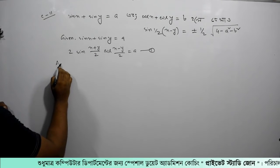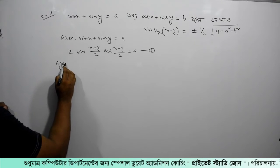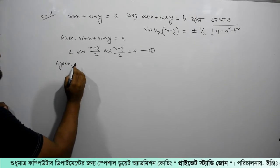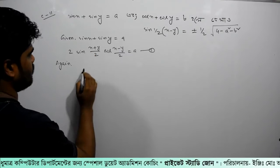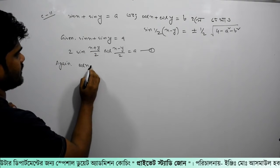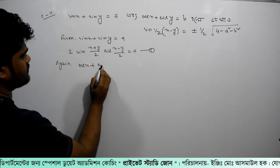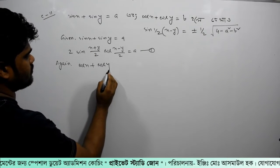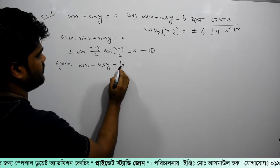Again, this is cos x plus cos y equals b.